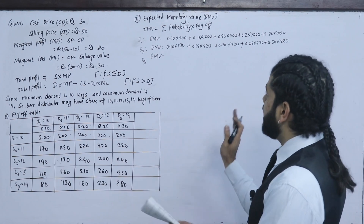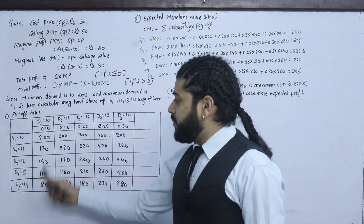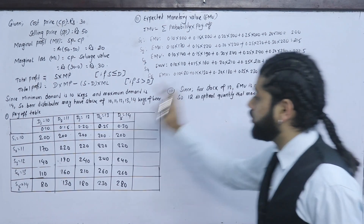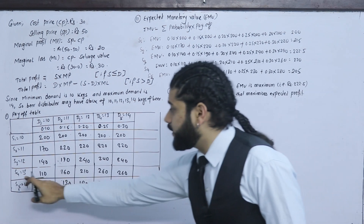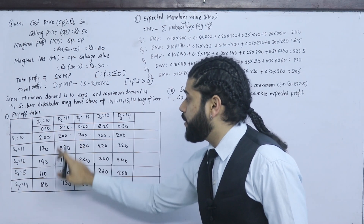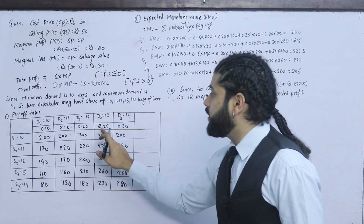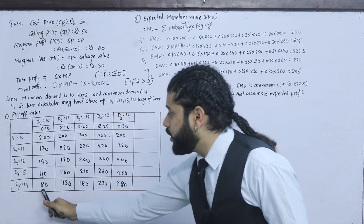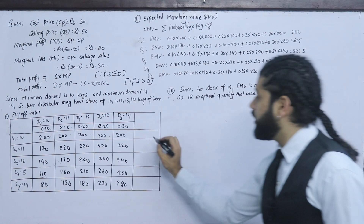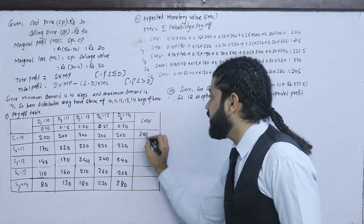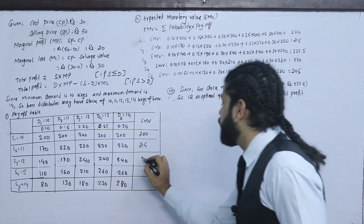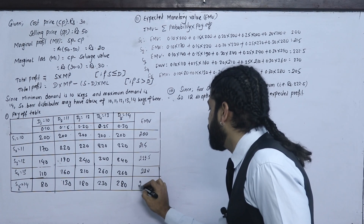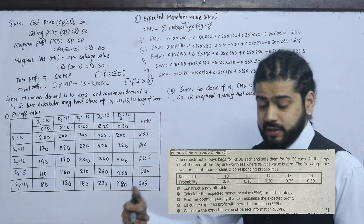The EMV results are: for S1 the answer is 200; for S2 the answer is 222.5; for S3, computing 0.10 into 110, 0.15 into 160, 0.20 into 210, 0.25 into 260, 0.30 into 260 gives 225.5 (approximately). For S4 the answer is 215, and for S5 the answer is 205. The maximum EMV is 222.5.